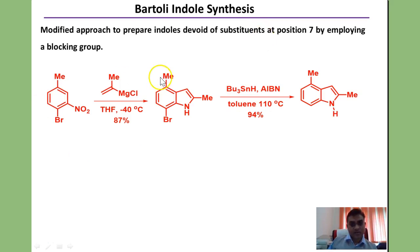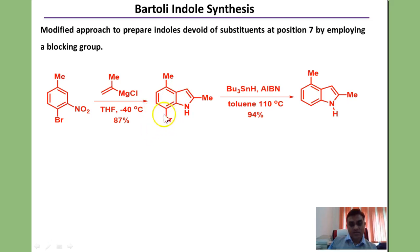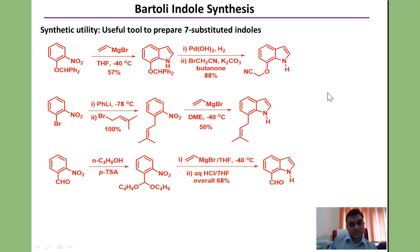Sometimes a 7-substituent may not be required. In that case one can use ortho-bromonitrobenzene as the substrate. Performing Bartoli indole synthesis gives a 7-bromo indole derivative, and later this bromine can be removed by tributyltin hydride reduction using AIBN as an initiator, giving the indole molecule in 94% yield.